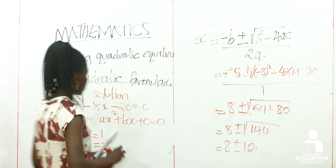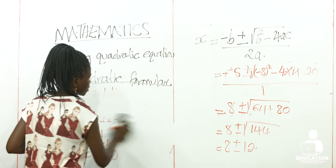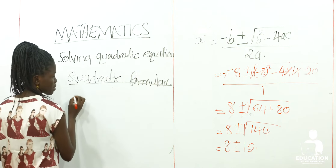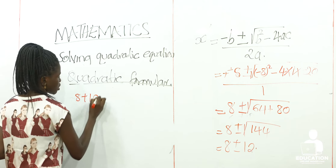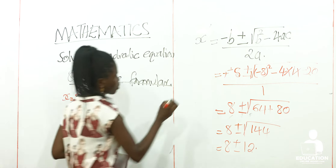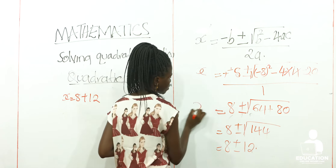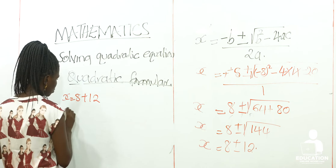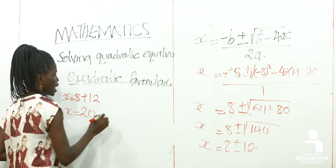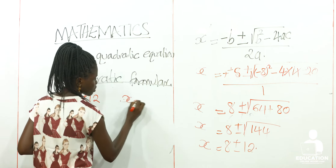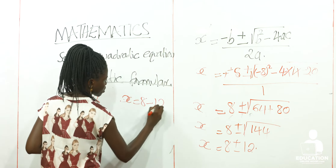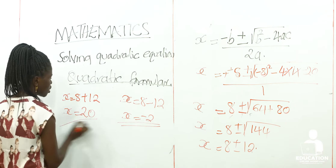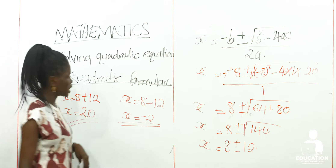So our two values of X are going to be: the first one, we shall have 8 plus 12, and we get X as 20. And the second X is going to be X equal to 8 minus 12, and our X is going to be negative 2. Those are the two values of X you get after using the quadratic formula.